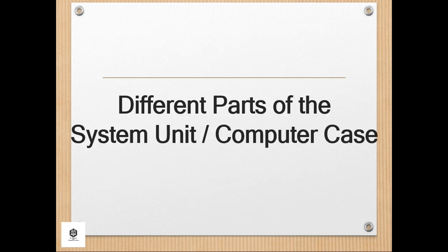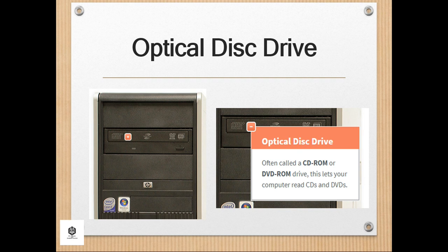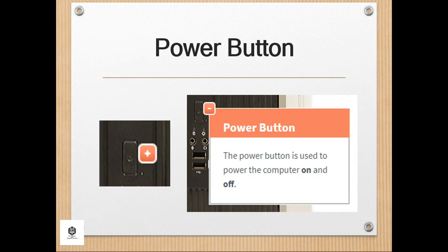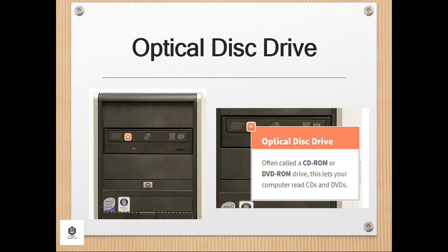Now let us talk about the different parts of the system unit or computer case, starting with the front panel. The optical disk drive — often called a CD-ROM or DVD-ROM drive — lets your computer read CDs and DVDs.